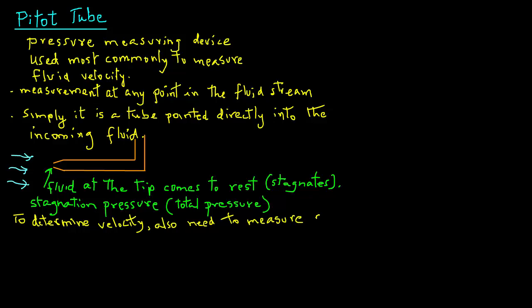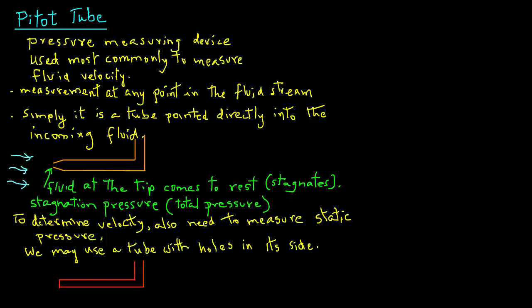Now, to measure the velocity of the fluid, we also need to measure what is called the static pressure. For static pressure, we could use a tube, as shown in this diagram, where the tube has got holes drilled on the side of the tube, and the front end of the tube, the tip of the tube, is closed. The side holes are the ones that will allow us to measure static pressure at that location.